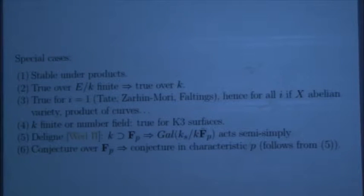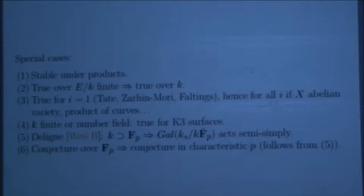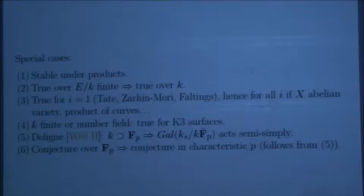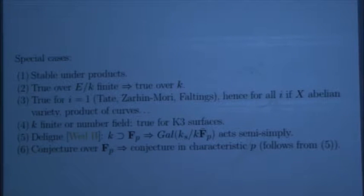That means the inertia part of the Galois group acts semi-simply — this is a theorem. And it implies that at least in characteristic p, the conjecture reduces to the case of smooth projective varieties over F_p. There's a further reduction to the cohomology of vanishing cycles for Lefschetz pencils, which follows the reduction of Deligne in Weil II to prove the Weil conjecture. This was observed in a slightly different way by Laumon a long time ago.